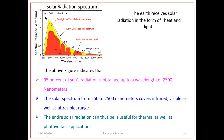The entire solar radiation can thus be useful for both thermal and photovoltaic applications. The infrared range is useful for thermal applications, and the visible range is useful for photovoltaic applications. The Earth receives solar radiation in the form of heat and light, which can be utilized effectively in thermal and photovoltaic applications.